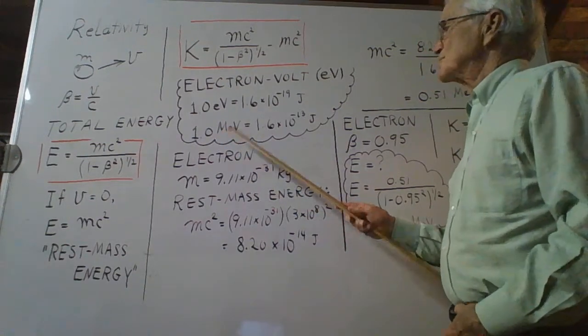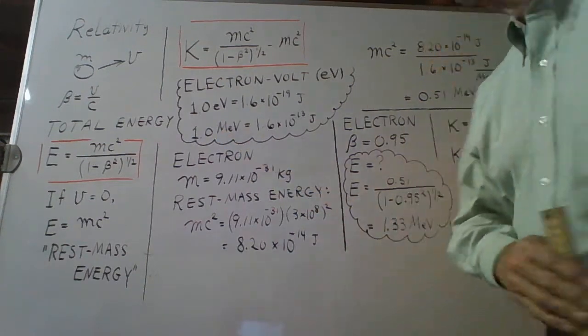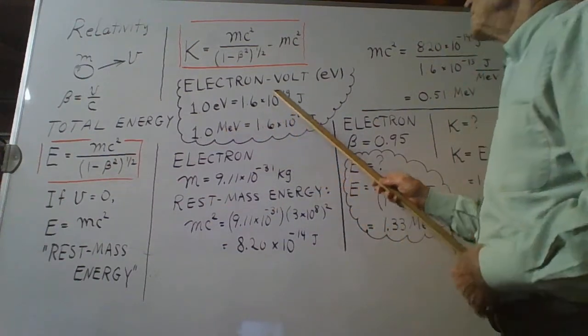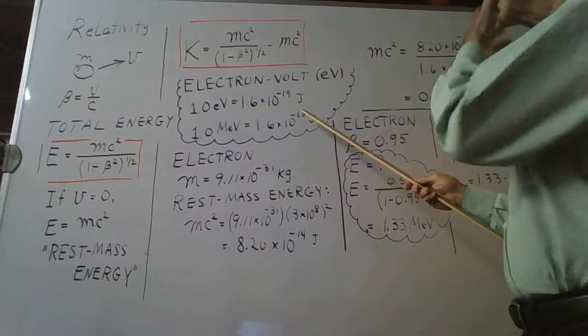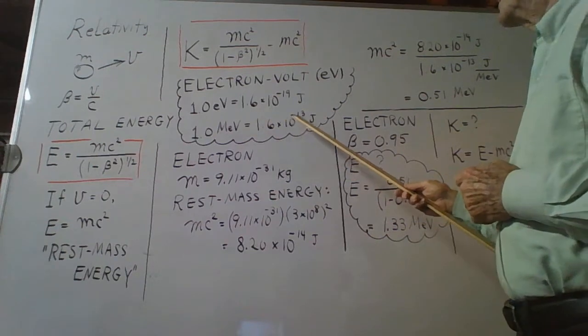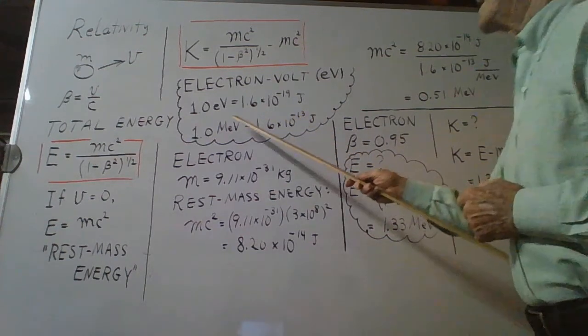A million electron volts, abbreviated MeV, is a million times that much, so add 6 to the 19 and you get that amount of joules per MeV.